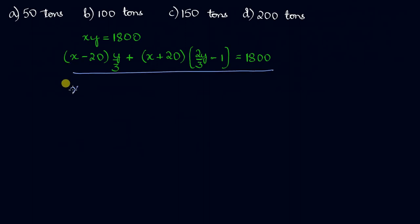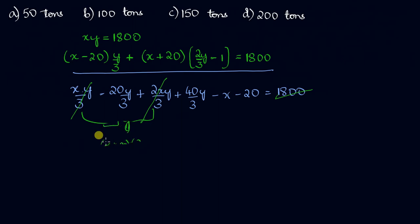So we have x times y by three minus 20y by three, plus x times two y by three, I can write it as two xy by three, plus 40y by three minus x minus 20 equals 1800. Now, as we can see here, xy by three and two xy by three add up to give an xy, and we know that xy is equal to 1800. So all these three can get cancelled. That's great!